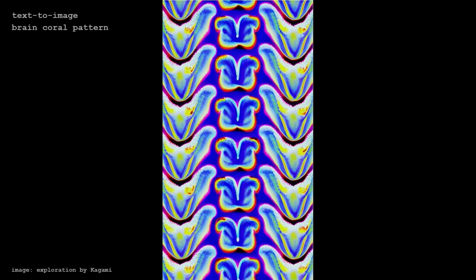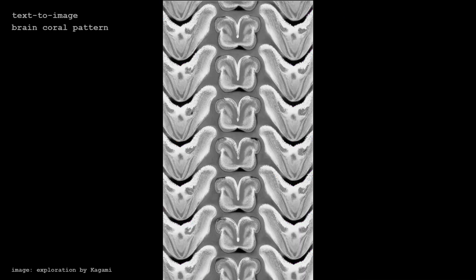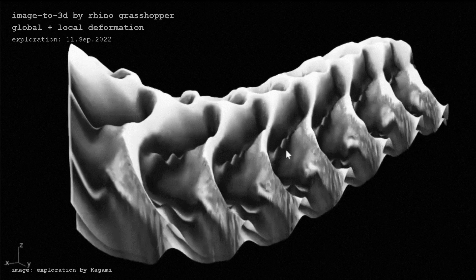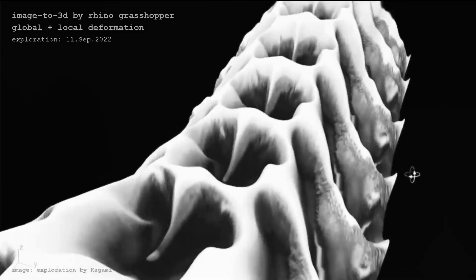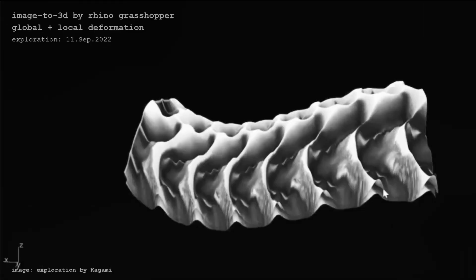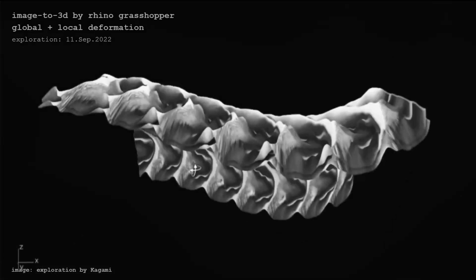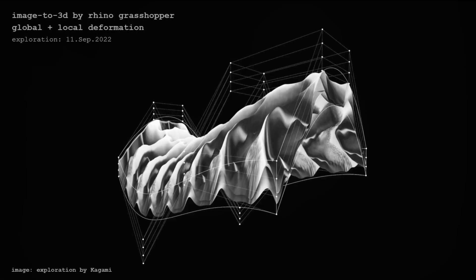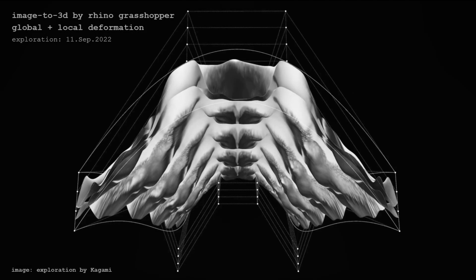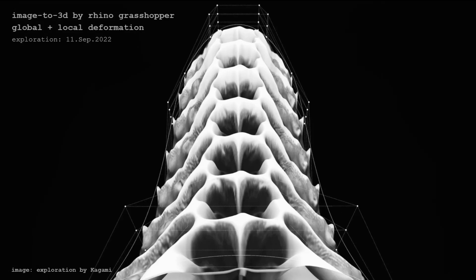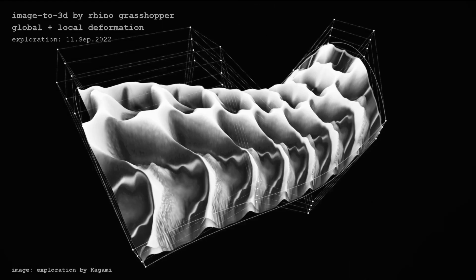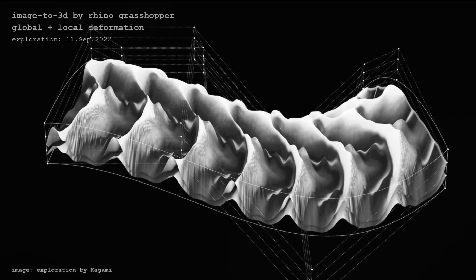The next experiment uses the prompt 'brain coral pattern.' Again, a grayscale image is made from the original image. The first and second experiments were based on a planar surface, but for this experiment the base geometry is deformed globally. The base geometry could also be a sphere, torus, or other geometric primitives. You can look at the output geometry with or without control points in different display modes.